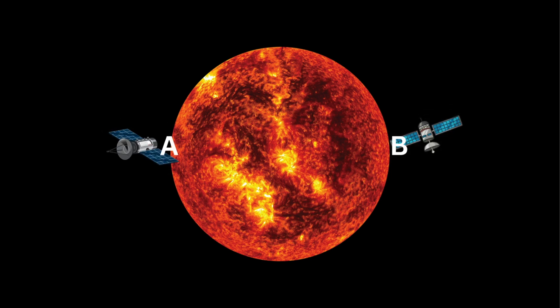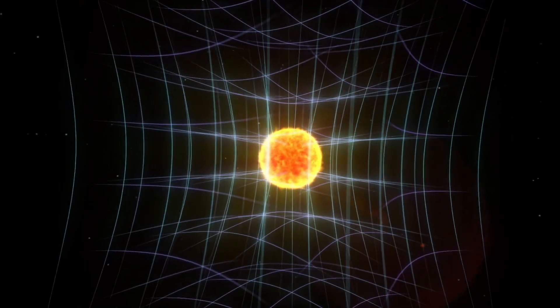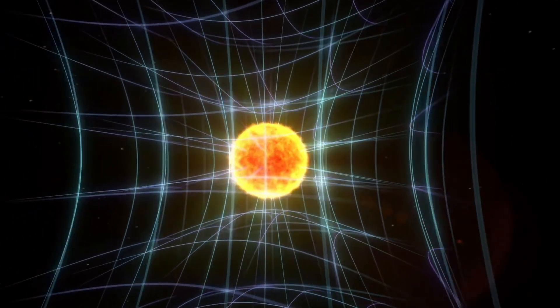As long as the sun is there, its massive gravity bends space-time. And because of that curvature, the distance between points A and B is also 1.4 million kilometers. But now, imagine the sun suddenly disappears. Its mass vanishes, and with it, its ability to warp space-time.